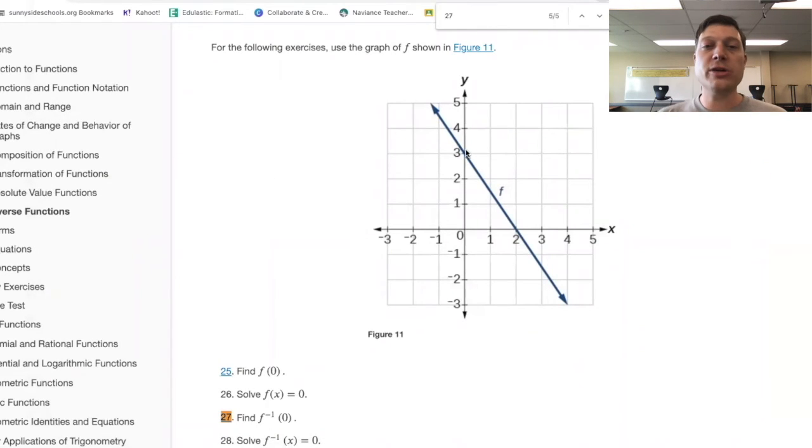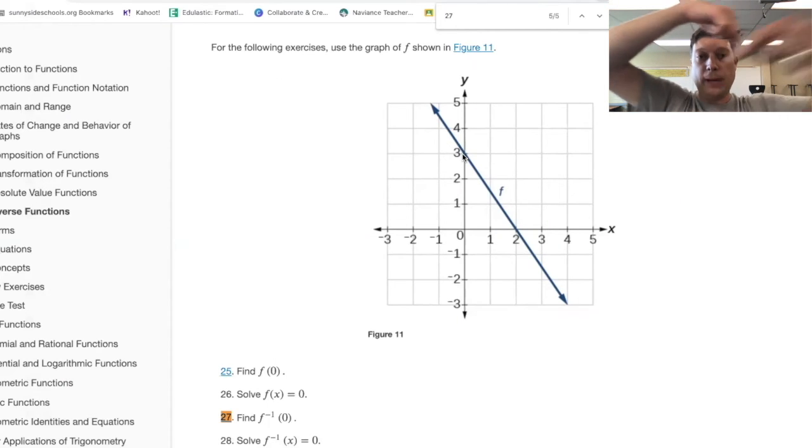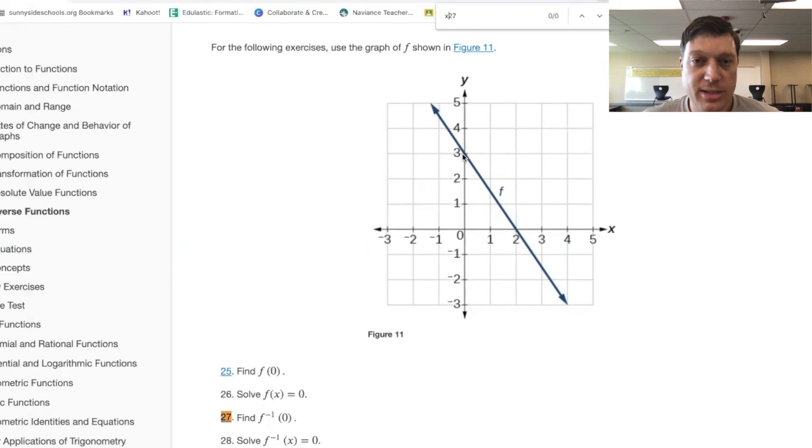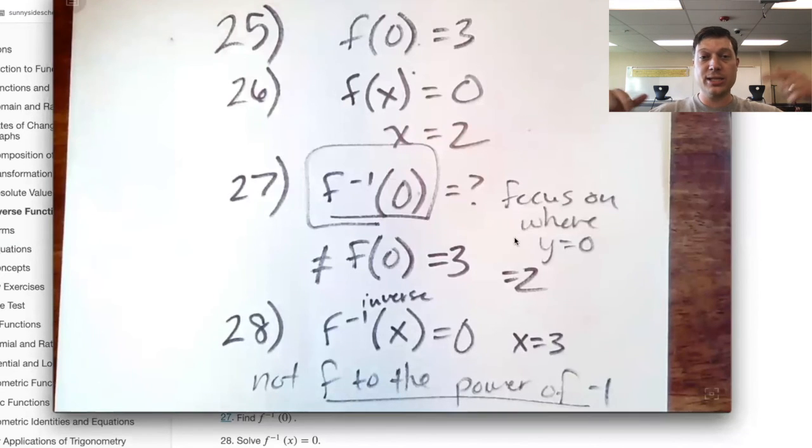When the next one, f inverse of x equals zero. So we're looking for the reverse, the flip around, and we wind up saying that f inverse of x equals zero when x is three.